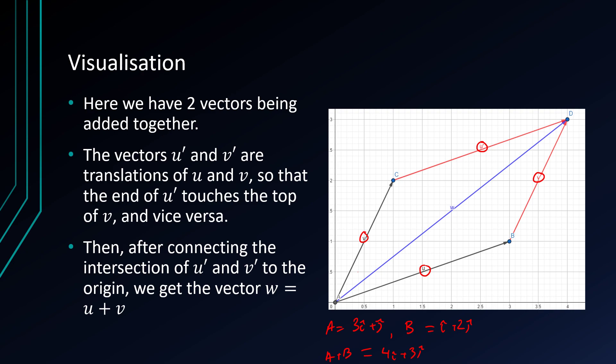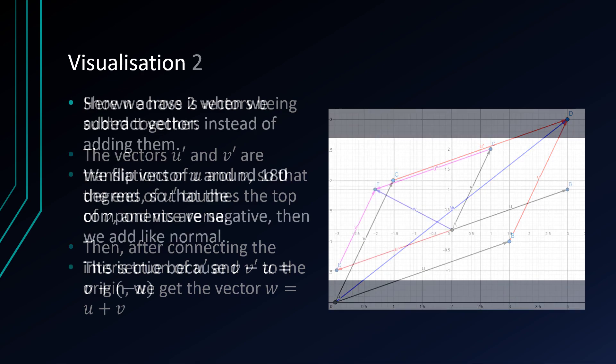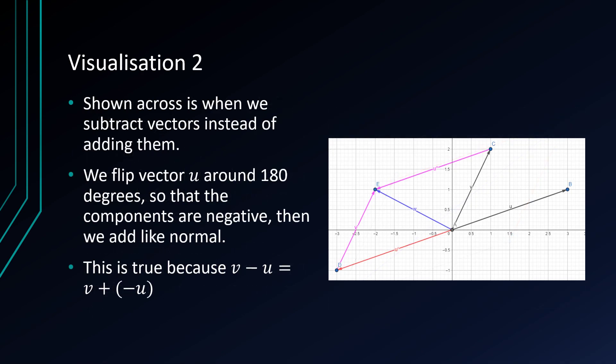But subtracting vectors is slightly trickier to see visually. So in subtracting vectors, u prime, or the first u prime, is actually the vector u flipped on its end, so it's flipped 180 degrees, or it's flipped in the line y equals negative x. So the first thing we do is flip u around. So now we have u prime as our vector, so now we're adding a u prime and a v.